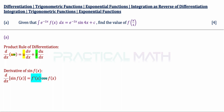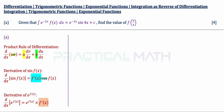We can then go on to the derivative of exponential functions. The derivative of e to the power of f(x) with respect to x gives us e to the power of f(x), multiplied by f prime of x, which is the differentiation result of the power. So differentiating e to the power of f(x) means you copy down e to the power of f(x), multiplied by the differentiation result of the power.